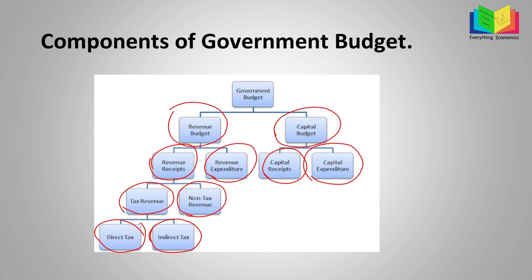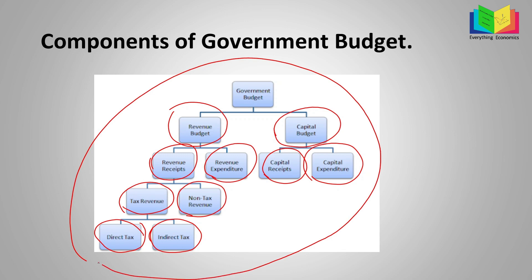Just look at this image to have an idea of what a government budget is — it's a financial statement which shows how much government is expected to spend and the revenue that it expects to receive in the following year. These are the components, and I will discuss them in much more detail in the next part. I'll see you in the next part.